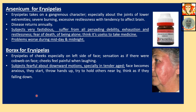Arsenicum for Erysipelas: Erysipelas takes on a gangrenous character, specially above the joints of lower extremities. Severe burning. Excessive restlessness with tendency to relieve pain. Disease returns annually. Subjects very fastidious, suffering from all-pervading debility, exhaustion, restlessness, and fear of death or being alone. Feels it is useless to take medicine. Problems worse during midday and midnight — these are the most important general symptoms of the person itself, not just the disease.